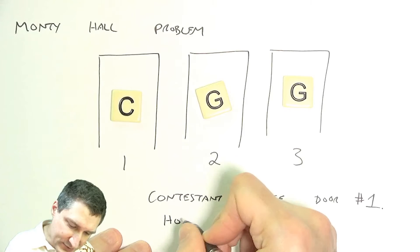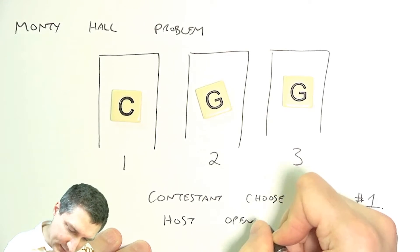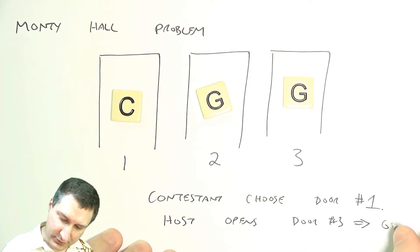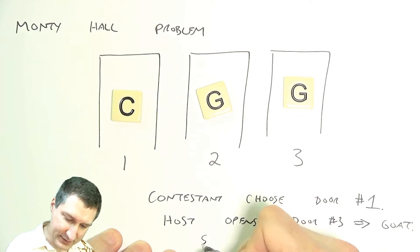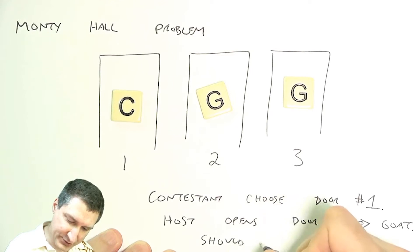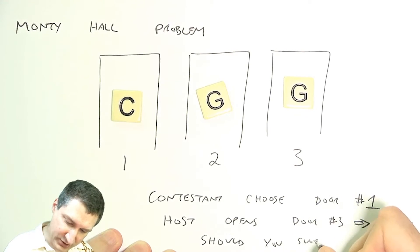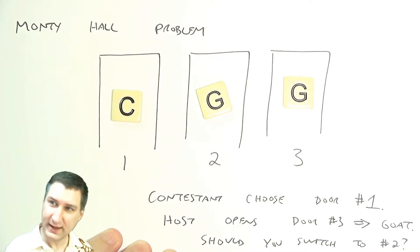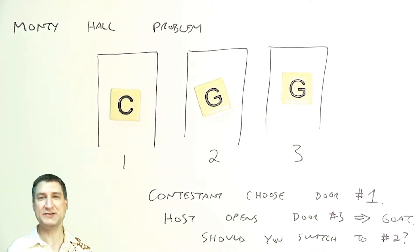Now the host opens door number three and shows you a goat. And the puzzle is, should you switch to door number two? That's the part that is counterintuitive, because it seems like just knowing that there's some other door that doesn't have the car behind it, how could that change the probability of door number one containing the car? Should you switch or not?